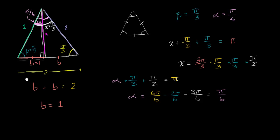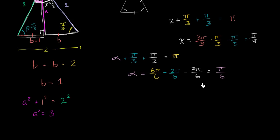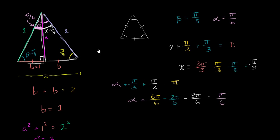Now we can use that to solve for a using the Pythagorean theorem. This is a right triangle, so a squared plus b squared, which is one squared, equals two squared. So a squared equals four minus one, which equals three, and therefore a equals the square root of three. You may recognize this as a 30-60-90 triangle.